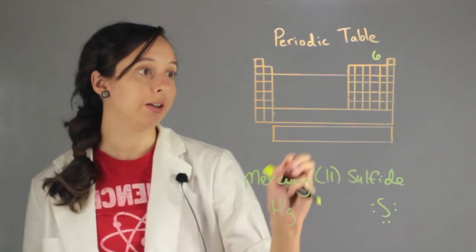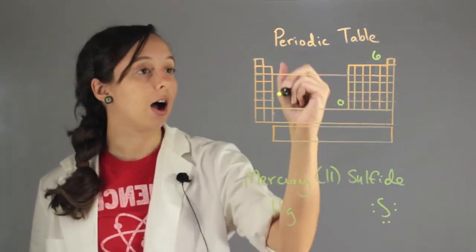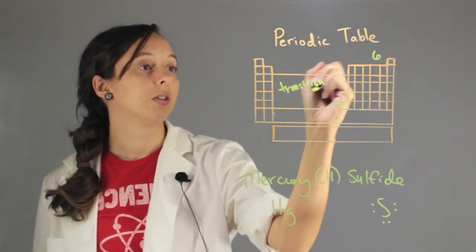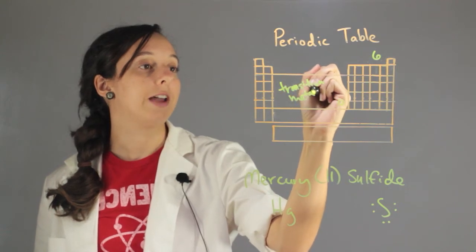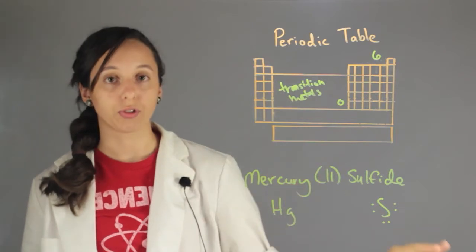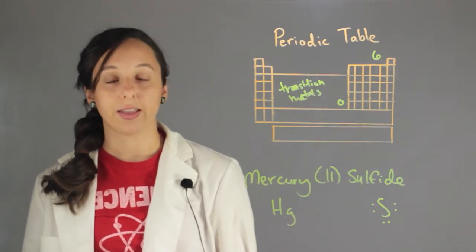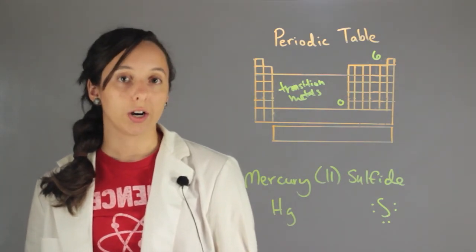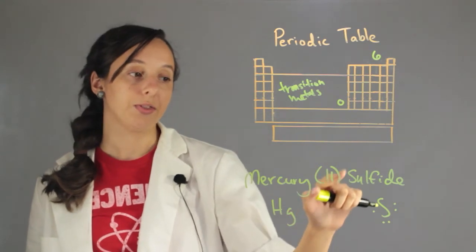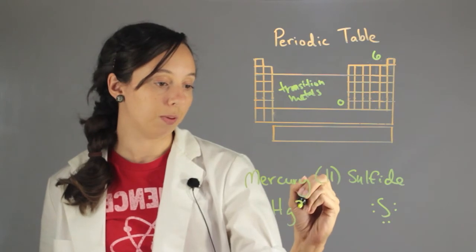And now mercury is actually over here in the transition metal block of the periodic table. And the transition metals don't have such a simple way for figuring how many extra electrons they have. They kind of have a bunch of complicated rules that are hard to learn. So that means that when we're notating anything that has a transition metal in it, we always include the charge by writing it in the parentheses. So in the parentheses, Roman numeral two means that this particular mercury atom has a charge of positive two.